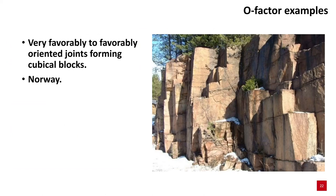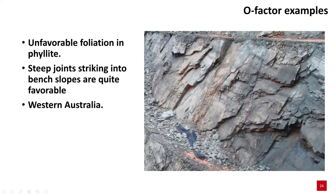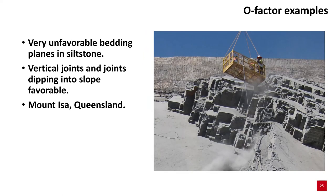Some other examples. Very favourable to favourably orientated joints forming cubical blocks in Norway — very unlikely to have any form of instability. From saprolitic rocks in Panama, two otherwise quite unfavourable relic joints forming a wedge. In this photograph, unfavourably orientated foliation in phyllite; however, the joints striking into the slope are quite favourable — a typical goldfield setting in Western Australia. From Mount Isa in Queensland, very unfavourable bedding planes in siltstone that constantly cause localised instability; however, the vertical joints and joints dipping into the slope are generally favourable.